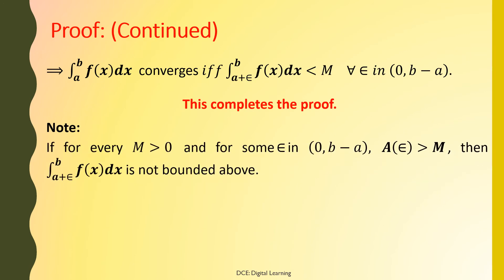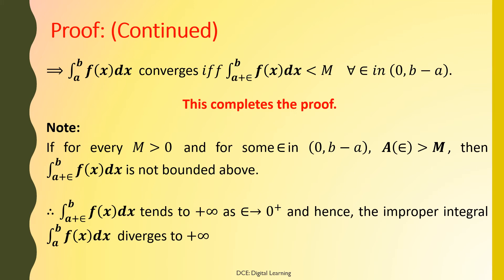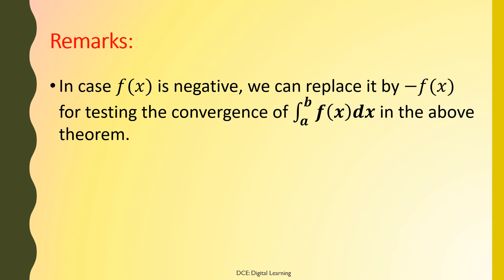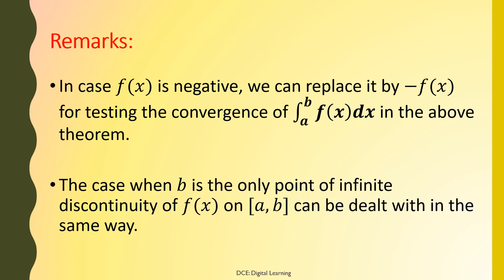Note: if for every M > 0 and for some epsilon in (0, b−a), A(epsilon) is greater than M, then the integral of f(x) dx from a+epsilon to b is not bounded above. Therefore, the integral of f(x) dx from a+epsilon to b tends to plus infinity as epsilon tends to 0 from the right, and hence the improper integral of f(x) dx from a to b diverges to plus infinity. Remarks: In case f(x) is negative, we can replace it by −f(x) for testing convergence. The case when b is the only point of infinite discontinuity can be dealt with in the same way.